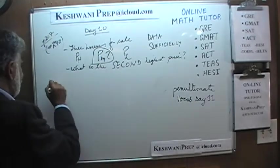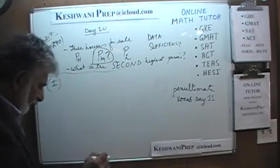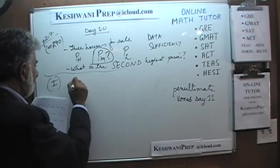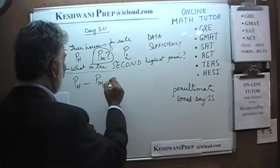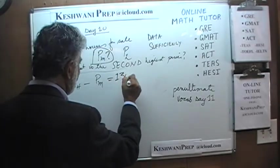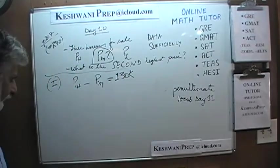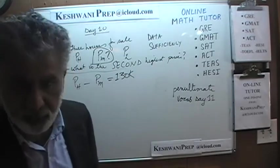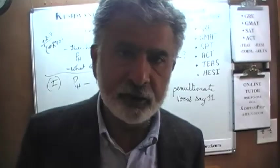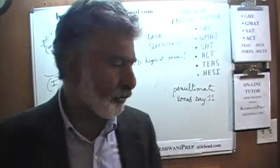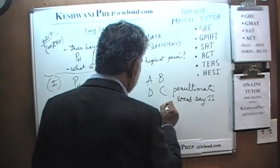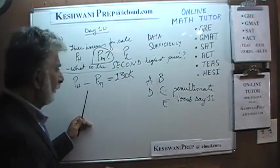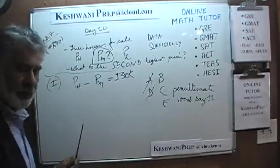The first statement tells us the difference between the highest price and the middle price is $130,000. Simply knowing that difference does not enable us to figure out what the middle price actually is. The first statement by itself is not enough. The answer cannot be A or D.